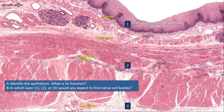In the GI tract, parasympathetic ganglia are concentrated in plexuses in the wall. A ganglion, by definition, is a collection of nerve cell bodies outside the central nervous system.